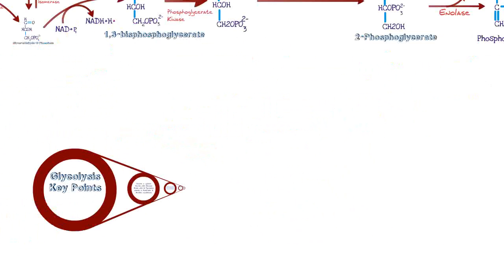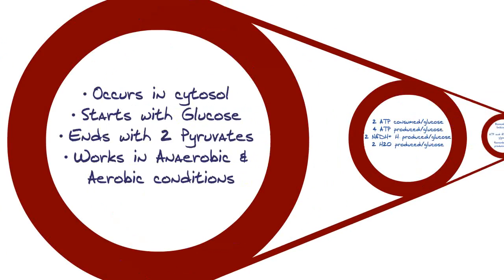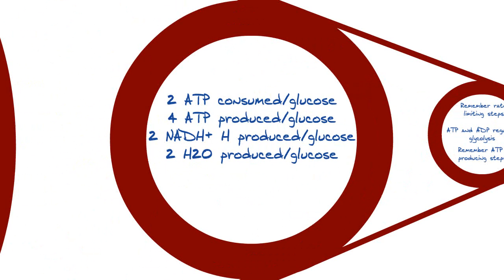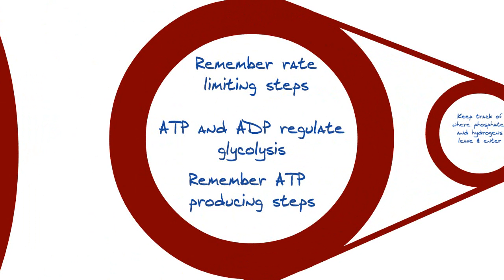What are the key points to understand about glycolysis? Glycolysis occurs in the cytosol of the cell. You start with glucose and end with two pyruvates. Glycolysis works in both anaerobic and aerobic conditions. You produce four ATP but consume two ATP, so you net two ATP per glucose molecule. You produce two NADH and hydrogen ions for every glucose, and two water molecules as well. It's really important to memorize the rate-limiting steps — the ones that require ATP. Understand that ATP and ADP regulate glycolysis: if your body needs energy, it promotes glycolysis; if there's too much ATP, it down-regulates glycolysis.